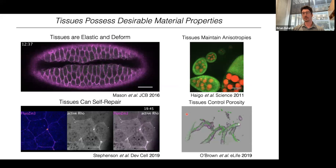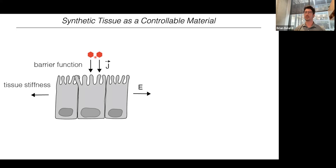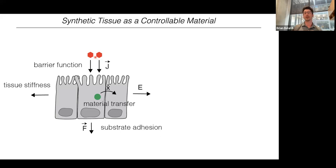So tissues also control porosity, and there's differential porosity throughout the body plan of organisms. All these impressive material feats are a consequence of the mechanistic driving forces within cells that govern tissue function and behavior. Some of these tissue functions include barrier function — the ability to regulate the flux of ions, salts, and macromolecules across the tissue — as well as tissue stiffness, adhesiveness to an underlying substrate, and material transfer between neighboring cells, which allows cells to maintain homeostasis for long periods of time.